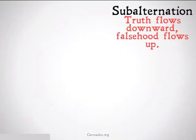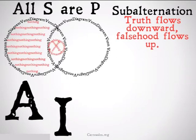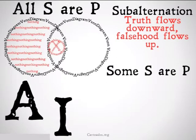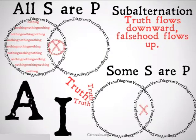Subalternation is the relationship where truth flows downward and falsehood flows up. It's a relationship that holds between A and I statements — A being on top, meaning 'all S are P,' and I being on the bottom, meaning 'some S are P.' Truth is supposed to flow downward and falsehood is supposed to flow up.